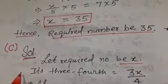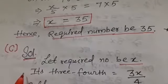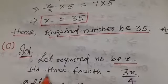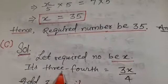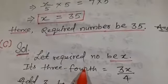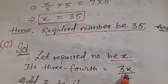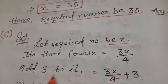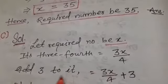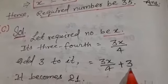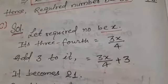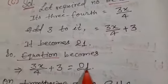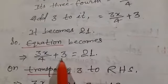The next question is: if I take three-fourths of a number and add 3 to it, I get 21. Let the required number be x. Three-fourths of x is written as 3x/4. Adding 3 to it gives 3x/4 + 3. According to the question this equals 21, so the equation is 3x/4 + 3 = 21.